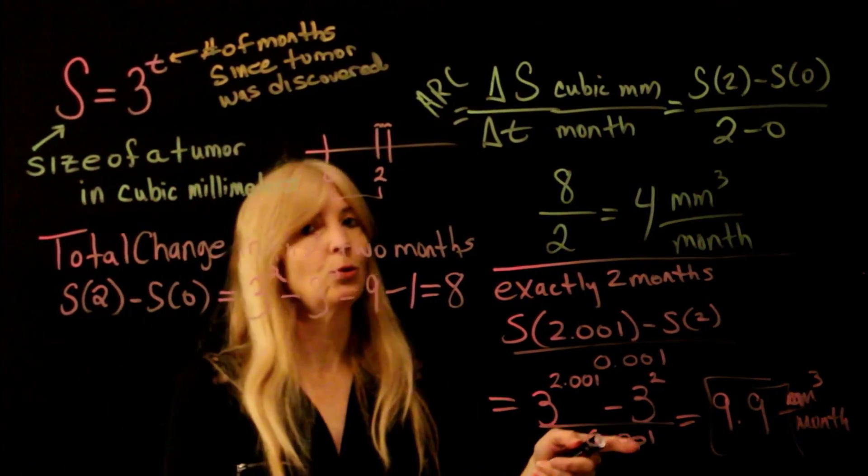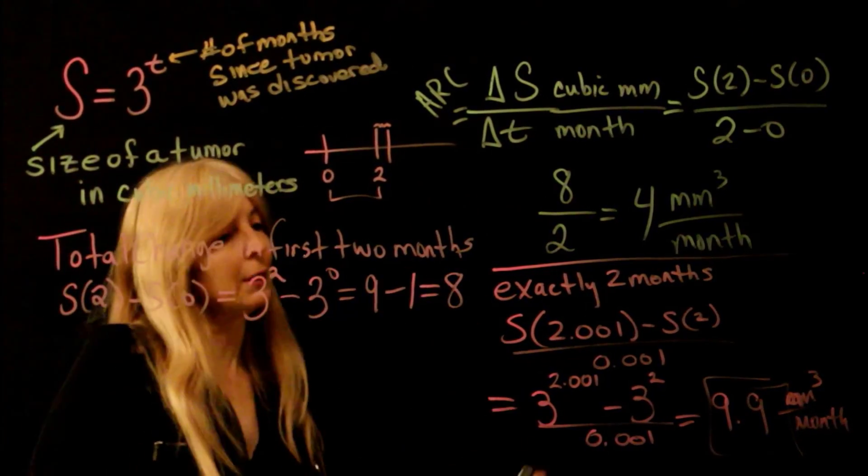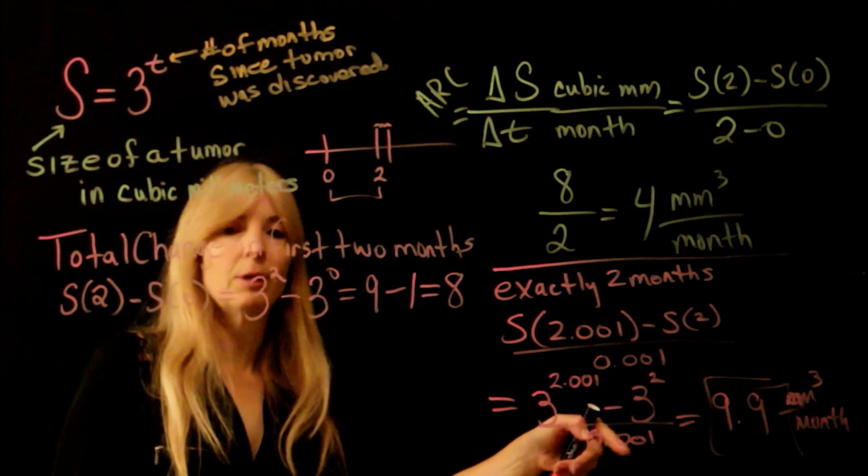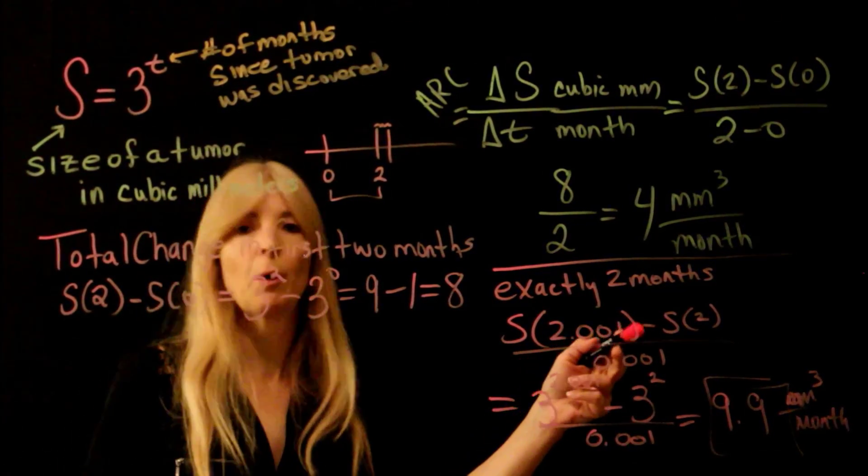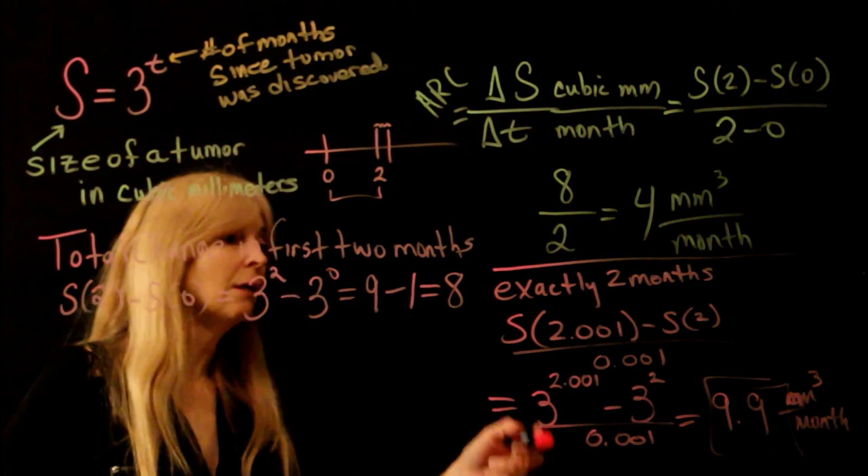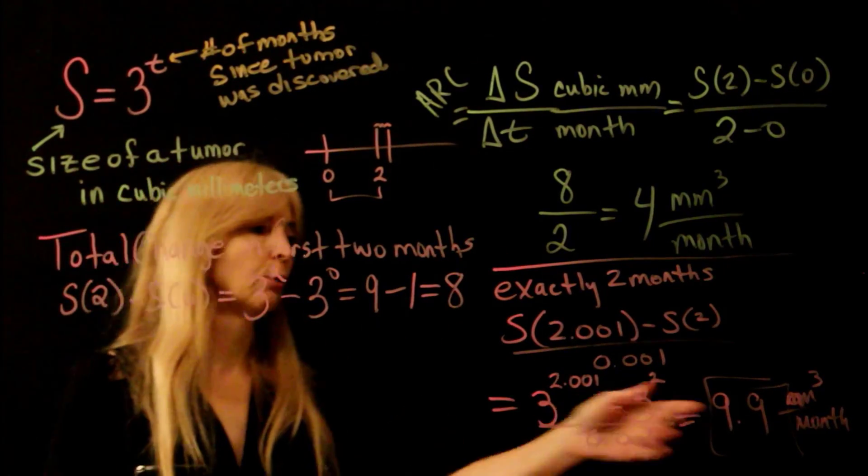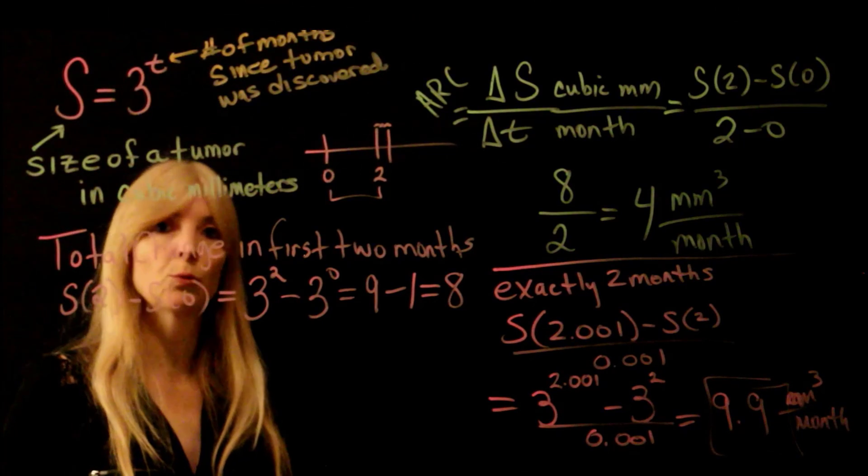So all this step is doing here is saying, what if I don't want from the first two months, I want it exactly month two. So this is getting into your instantaneous rate of change. If you let this value get smaller and smaller and smaller, you will see eventually that this hits a limiting value. It's just on the homework, it asks you to round to one decimal place. All right, and so that's this one.